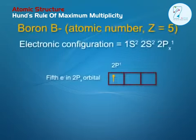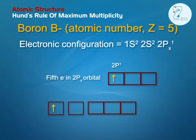Examples. Boron (B): Atomic number Z is equal to 5. Electronic configuration is equal to 1s2, 2s2, 2px1. The fifth electron enters in the 2px orbital.